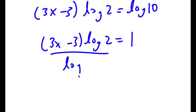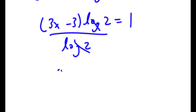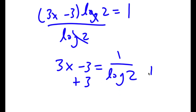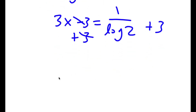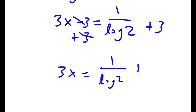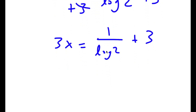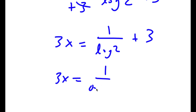So now I have 3x minus 3 times log 2 is equal to 1. If I divide both sides by log 2, these two cancel out and I get 3x minus 3 is equal to 1 over log 2. Now if I add 3 to both sides, I get 3x is equal to 1 over log 2 plus 3.